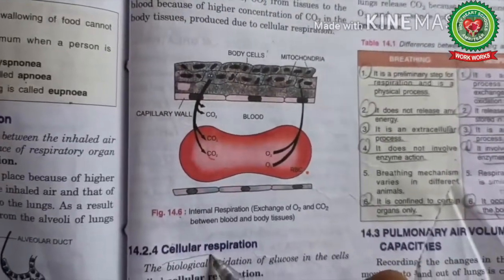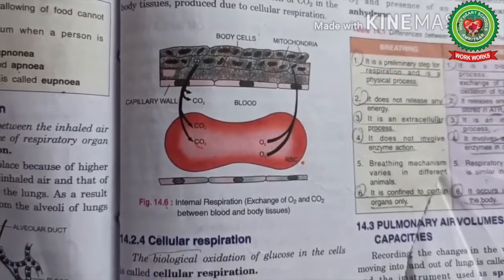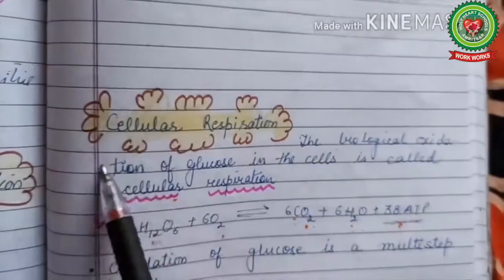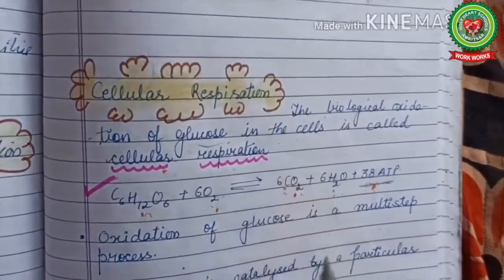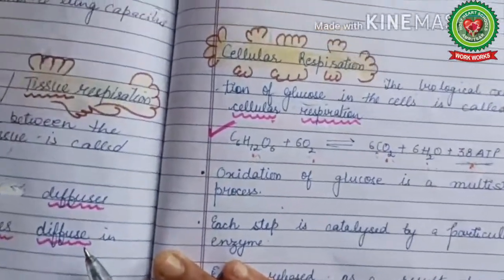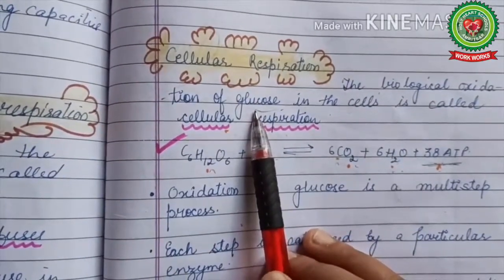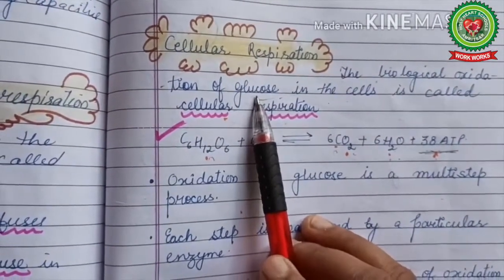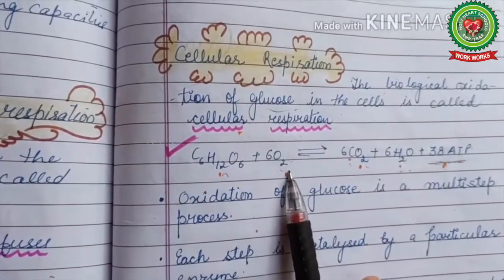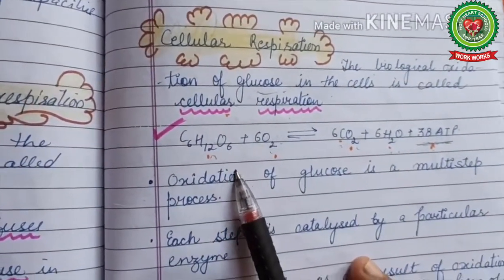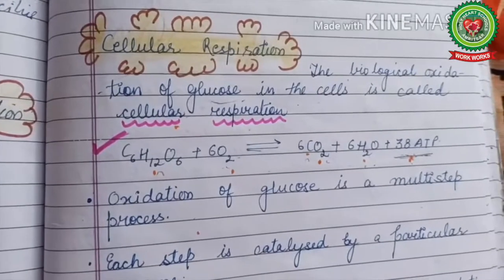Next is cellular respiration. From the name, it indicates that this type of respiration occurs inside the cells only. Cellular respiration means the biological oxidation of glucose in the cells. In the chapter on the digestive system, we discussed that during digestion, complex food is changed into simple and soluble form — the simplest form being glucose. When glucose combines with oxygen and its oxidation occurs, it gets broken down into carbon dioxide, water, and 38 ATP molecules are produced.